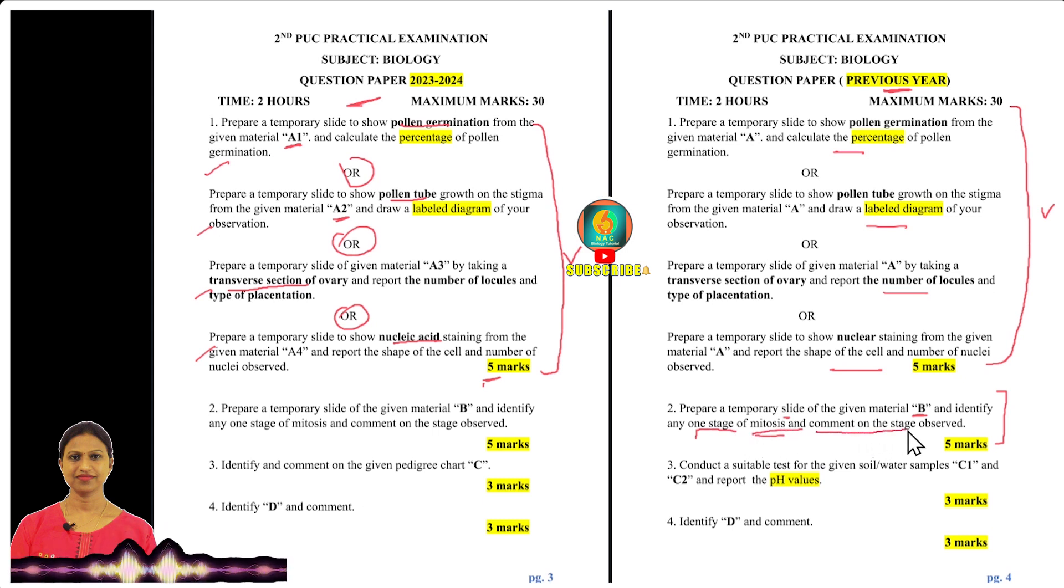Mitosis, which is the root tip cells. We can observe all the different stages of mitosis. In slide preparation and comment, you need to observe the stages. The C experiment has two samples, water and soil, to determine the pH value, that is acidic, basic, or neutral pH.